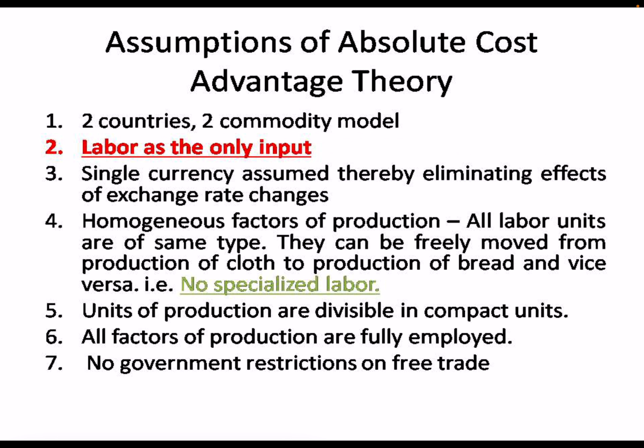For simplicity, the model assumes a homogenous factor of production — all labor units are the same type and are freely movable from one production to another, such as from cloth production to bread production. There is no specialized labor. Units of production are divisible, all factors of production are fully employed, unemployment is not assumed, and there is no government restriction on free trade.